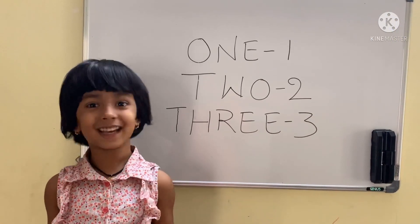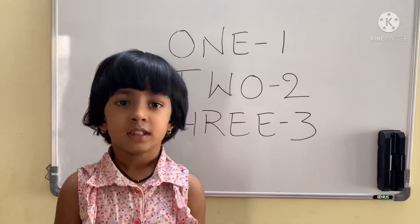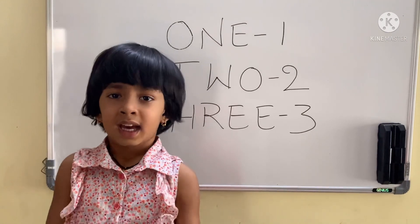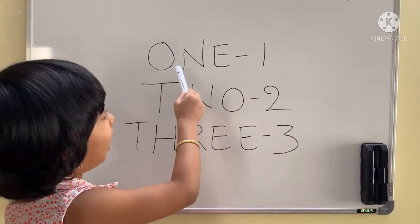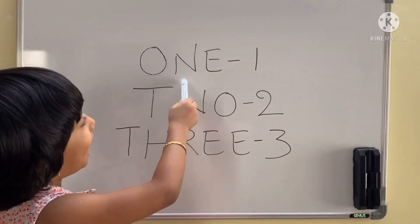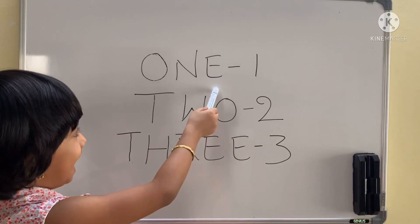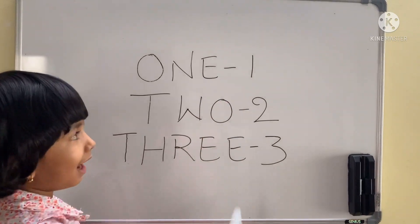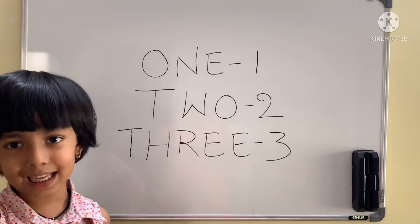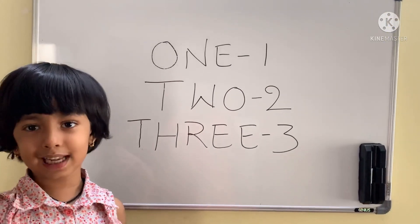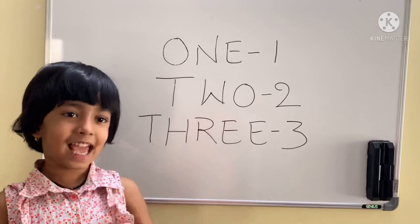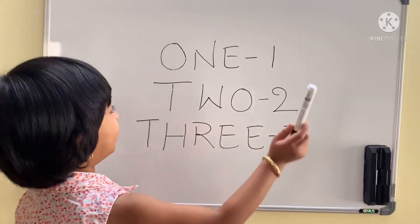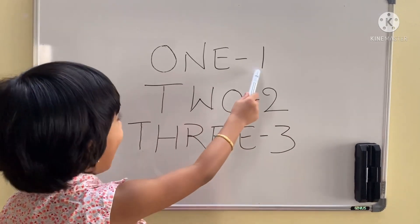Let's start children. Children, repeat after me: O, N, E. What is the number children? Yes children! One.